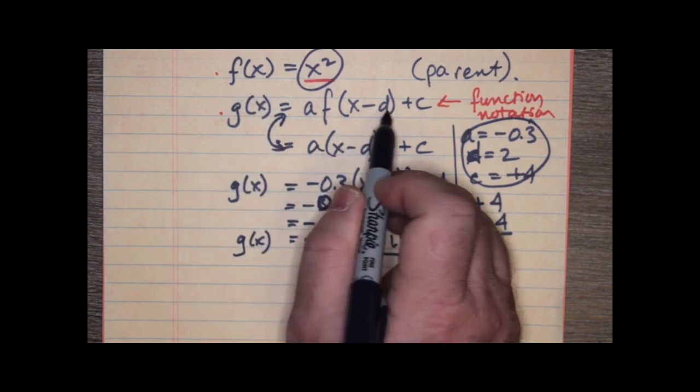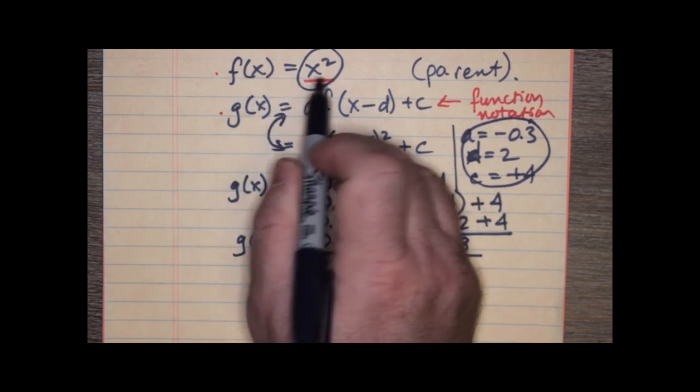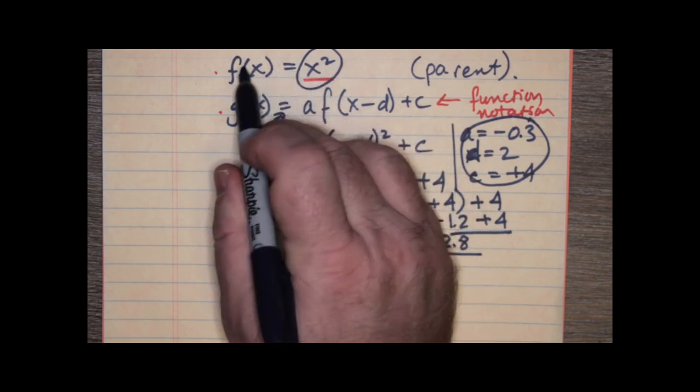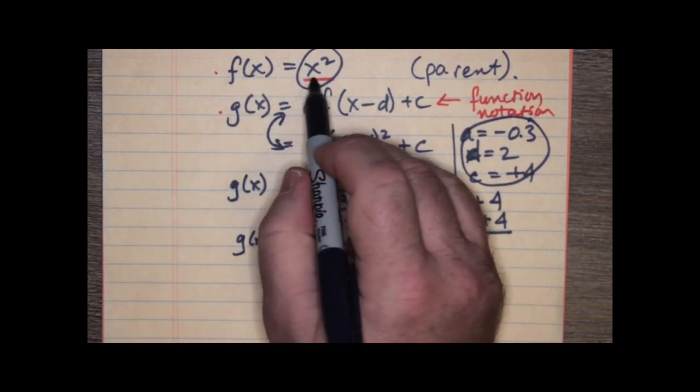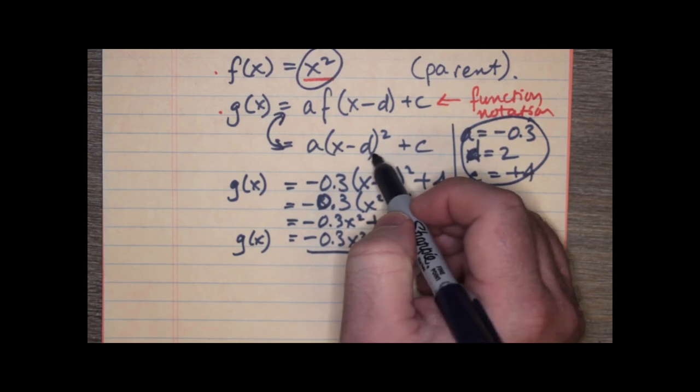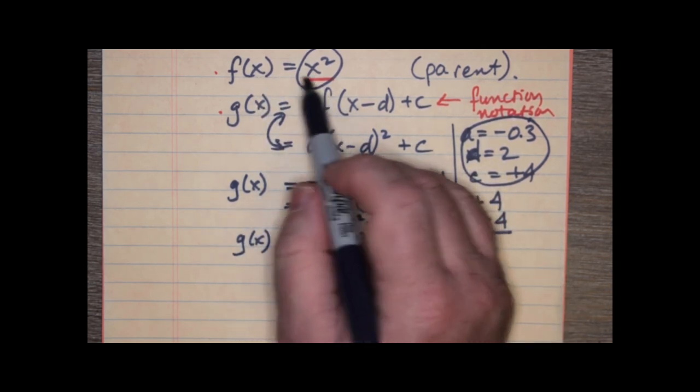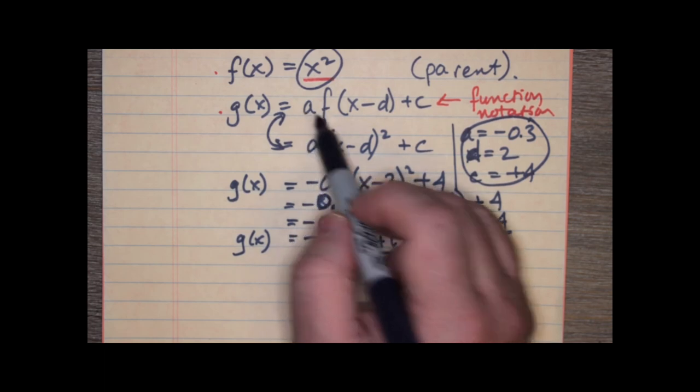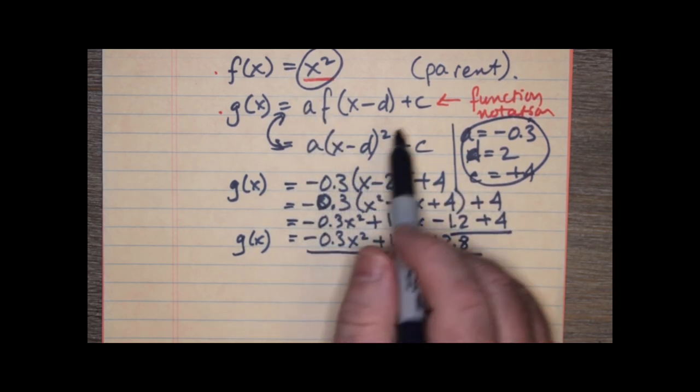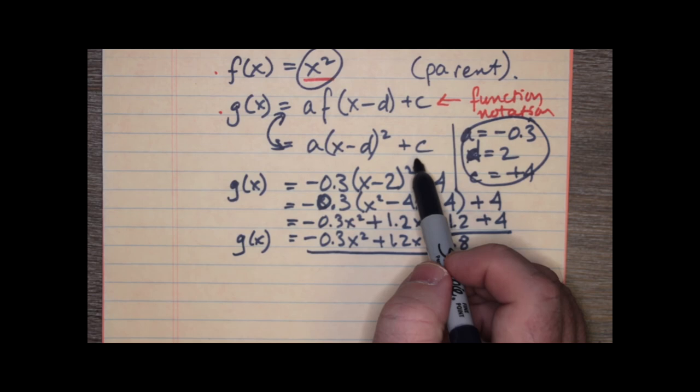This is really just another form of f of x, right? Because this is f of x minus d. f of x is already, the whole f of x is x squared. So, f of x minus d is x minus d all squared. Ah, okay. And then, if I multiply the whole function by a, that means that I multiply x minus d by a. And if I add c to the function, it looks like this.